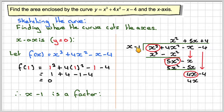4 times x gives 4x, and 4 times minus 1 gives minus 4. Then we'll do a subtraction and get nothing, which we expected because x minus 1 was a factor.